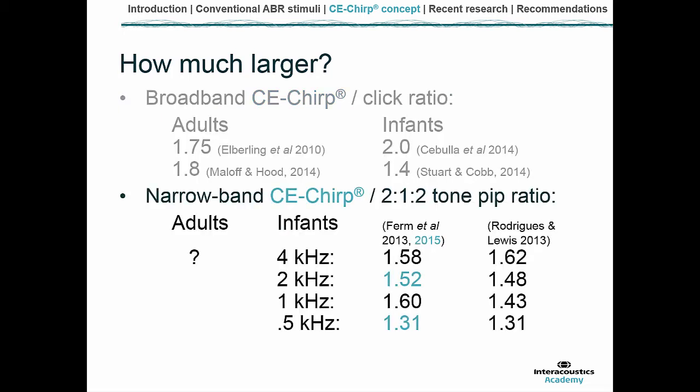With my colleagues Guy Lightfoot and John Stevens, I completed a similar study comparing narrowband CE chirps and tone PIPs (or tone bursts) in infants. We found that the narrowband chirp amplitude at 4 kHz, 2 kHz, and 1 kHz is at least 1.5 times the size of the tone PIP response. At 500 Hz the difference was about 1.3 times. Rodriguez and Lewis have produced similar results.